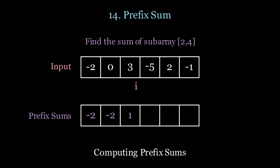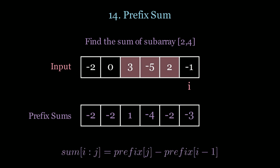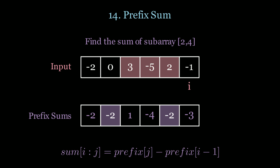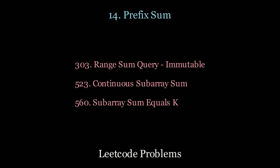Let's see how that looks by first filling out the prefix sums table. If I want to find the sum of 2 to 4, I use the formula: the sum of i to j is the prefix sum of j minus the prefix sum of i minus 1 — in this case we get zero. To get more practice, look at the following LeetCode questions.